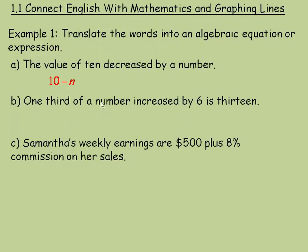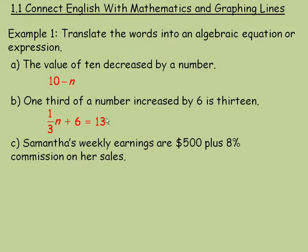In the second one, 'one third of a number' means we multiply the number by one third, or divide by 3 — we could write n divided by 3. 'Increased by' means we add 6. 'Is' translates to equals 13. So: one third n plus 6 equals 13. This is an equation because it has an equal sign. The first one, 10 minus n, was just an algebraic expression, not an equation.